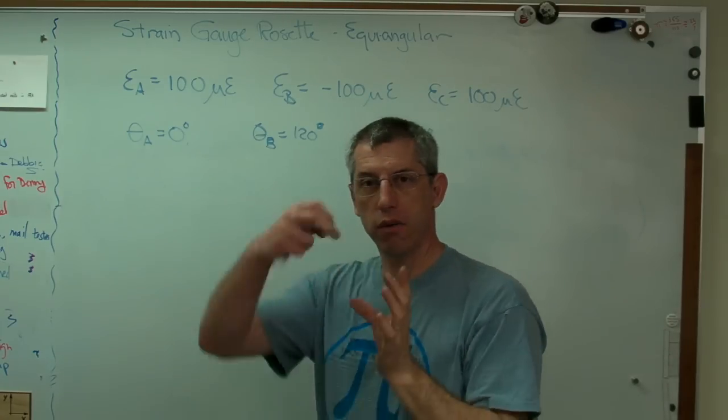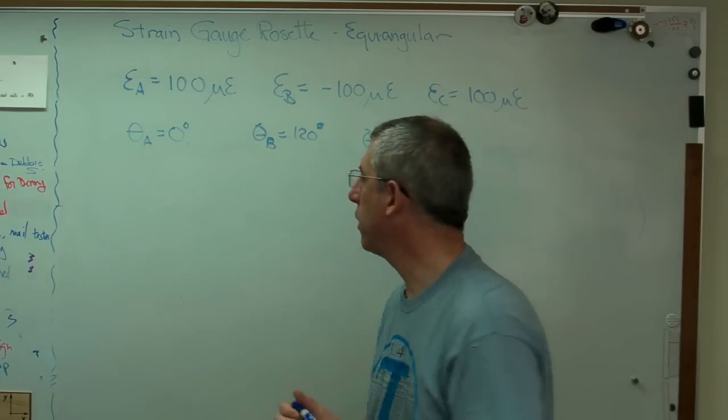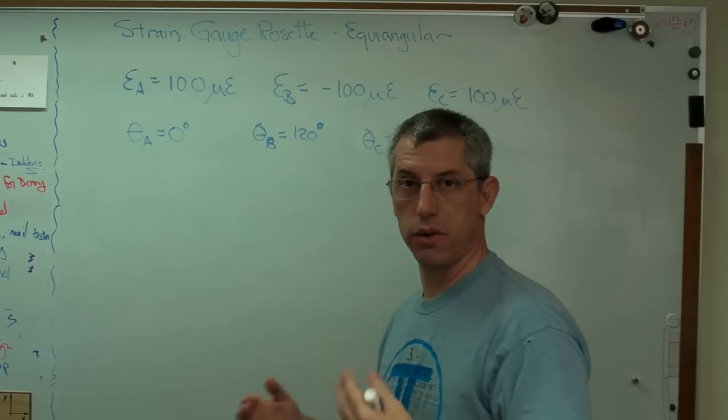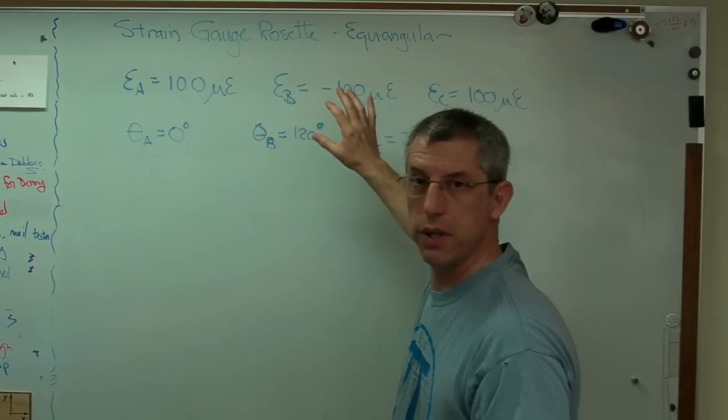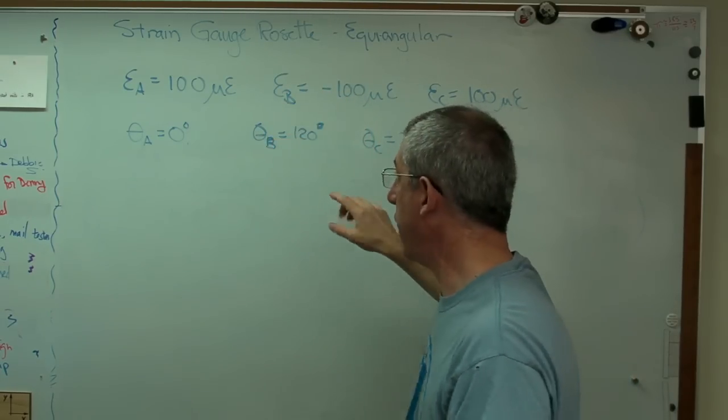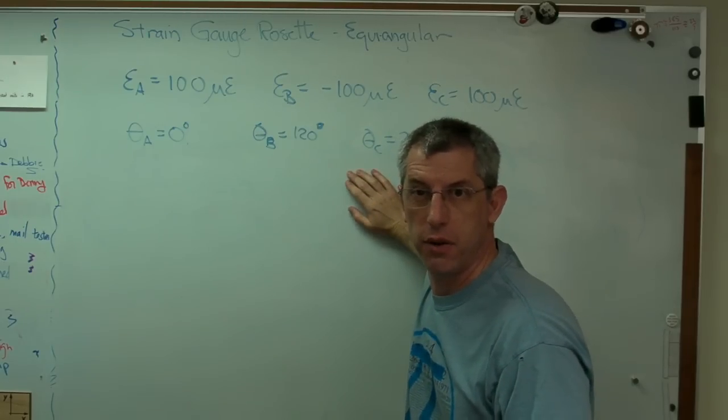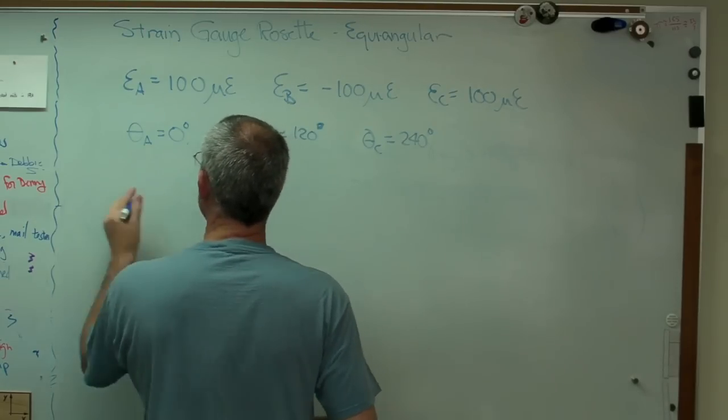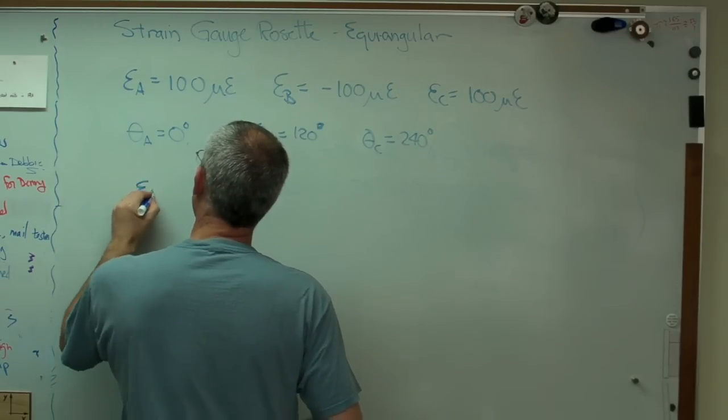So if I have a gauge, I can rotate it any way I want. Just stick it on. So what I'm going to do is fill up those equations. Now those equations, if you'll notice, the trig stuff just turns out to be numbers. Epsilon X, epsilon Y, and gamma XY are the things I want to calculate. So what I can do is I can write this out in matrix form if I want. And I want.